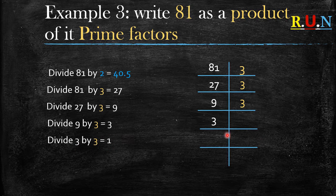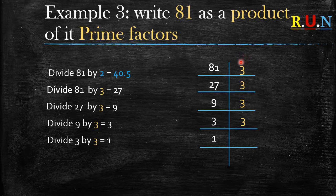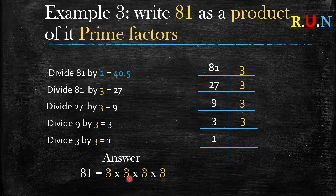3 divided by 3 gives us 1, which is still a whole number. Don't be confused — it is possible to reach the answer using only one prime number. So the answer is: 81 = 3 × 3 × 3 × 3. You can type 3 × 3 × 3 × 3 into your calculator to check that it gives you 81.